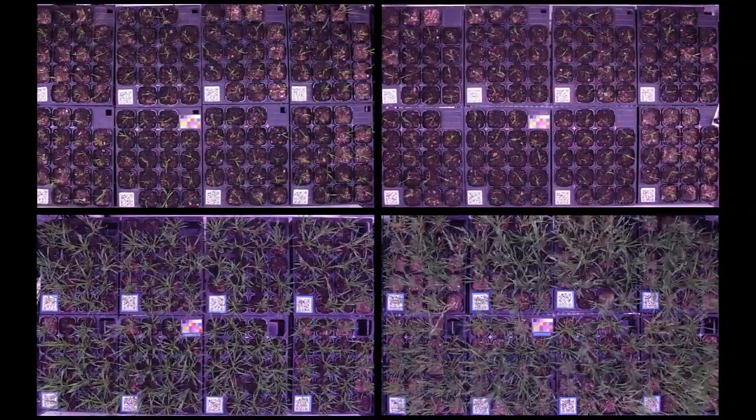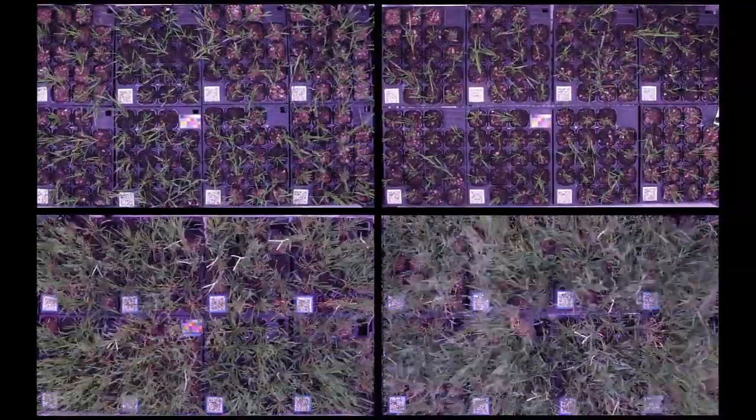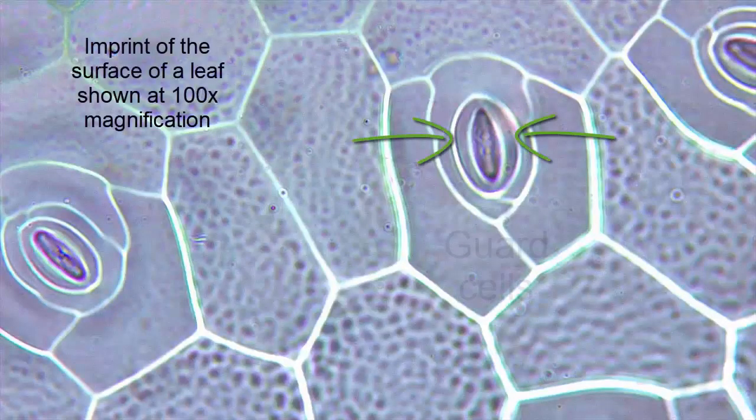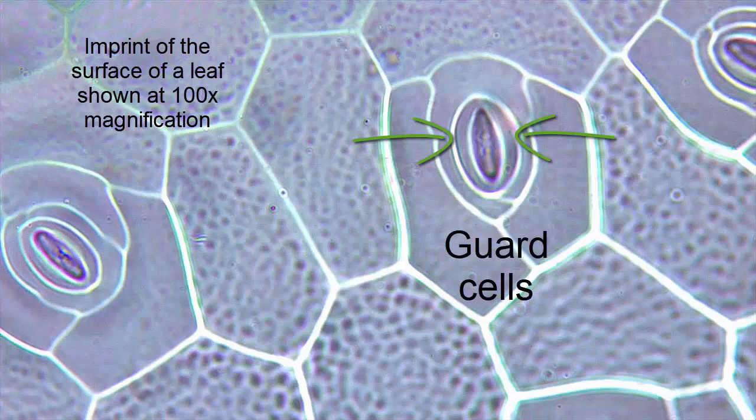Carbon dioxide moves by diffusion through small holes in leaves called stomata. Plant stomata have guard cells that control the opening and closing of the stomata so that the leaf does not lose too much water when the stomata open to take in carbon dioxide.